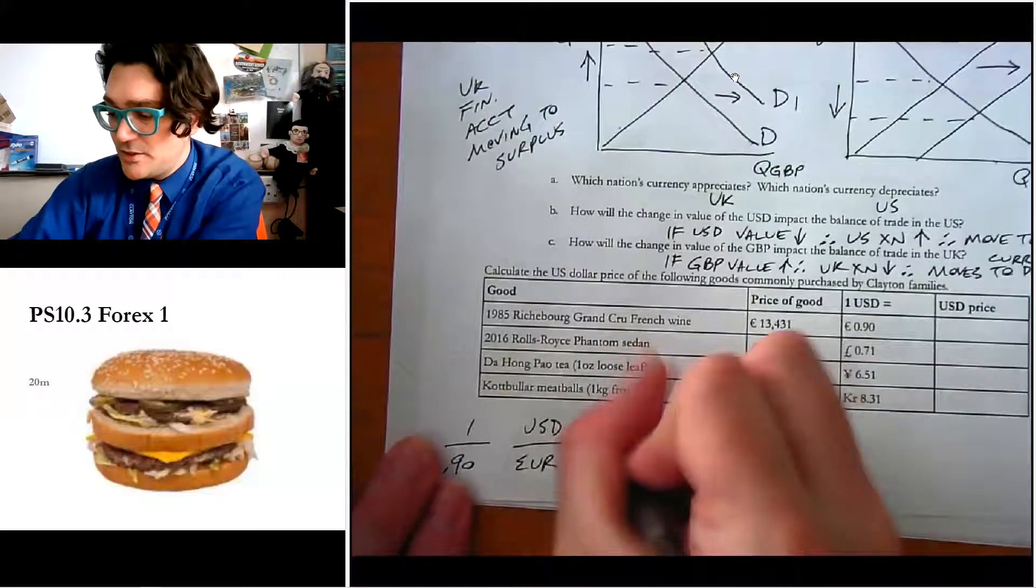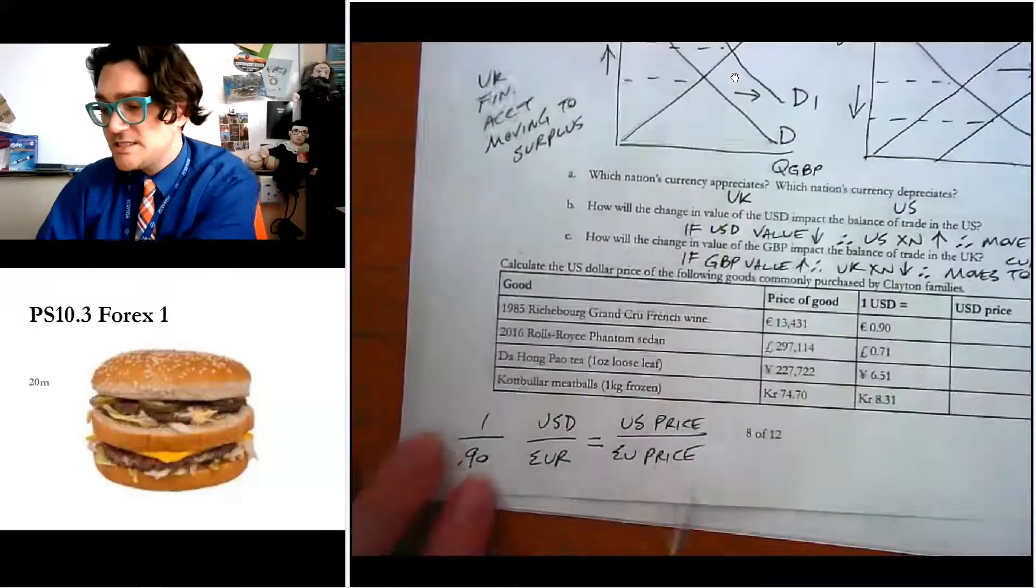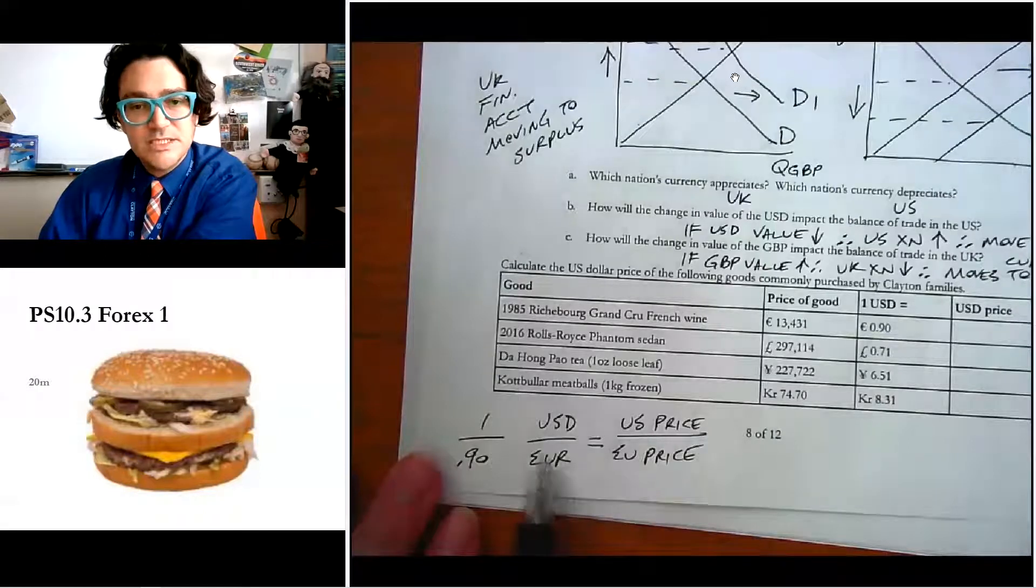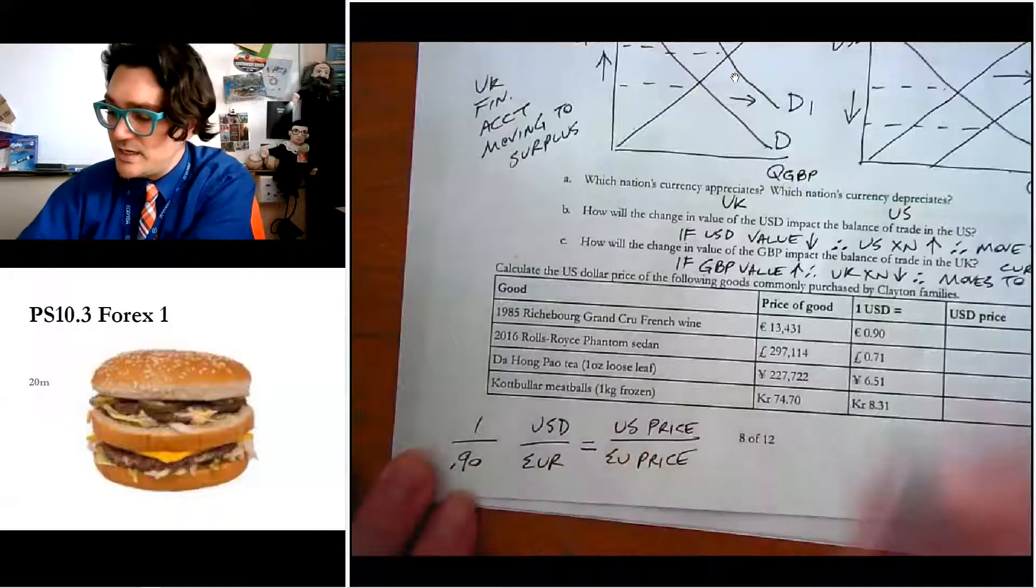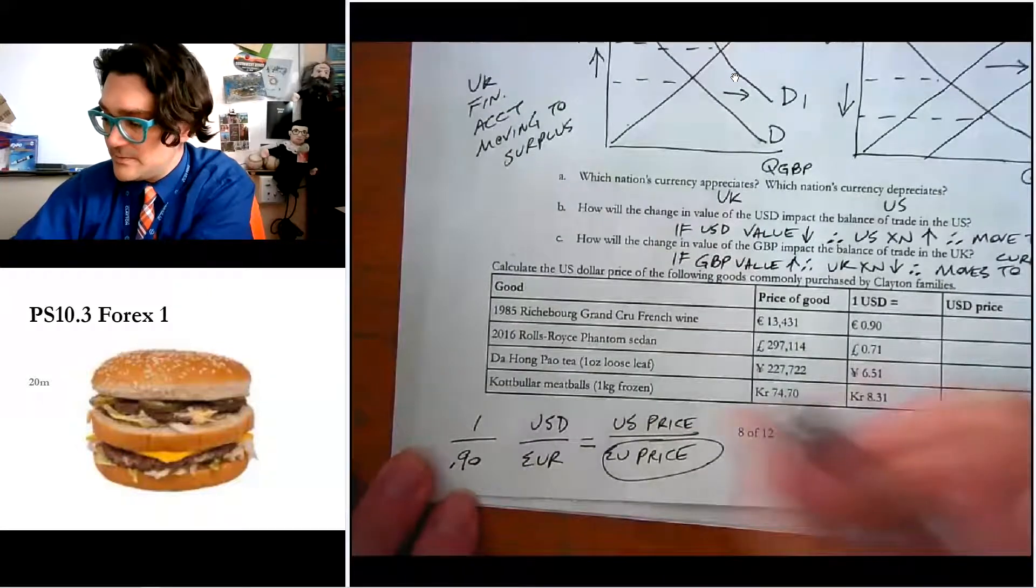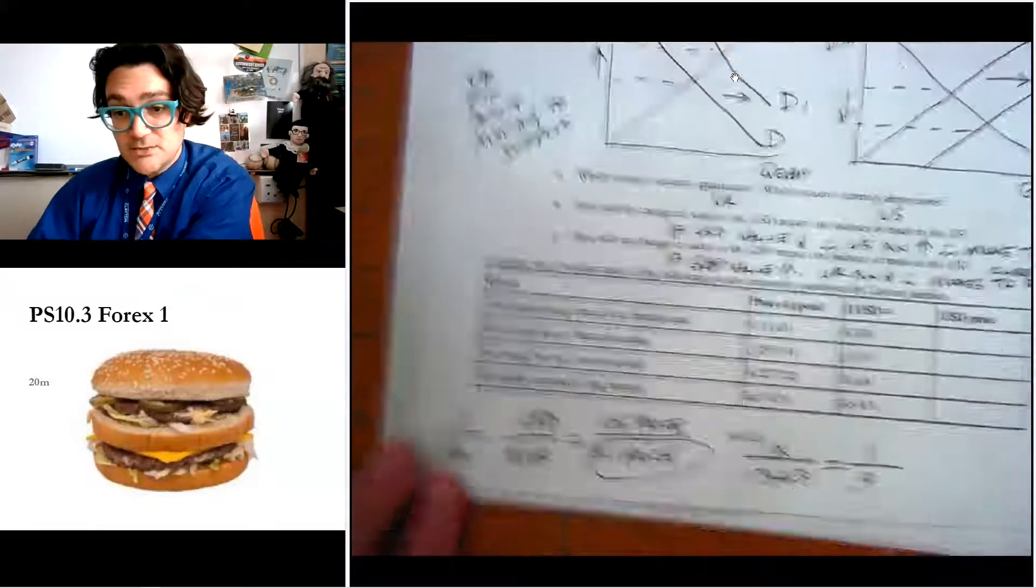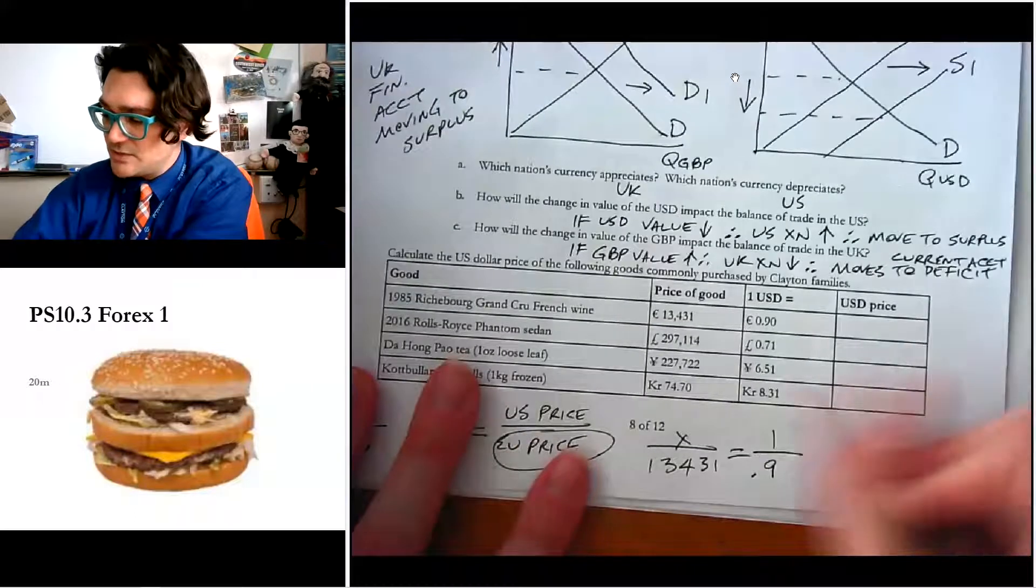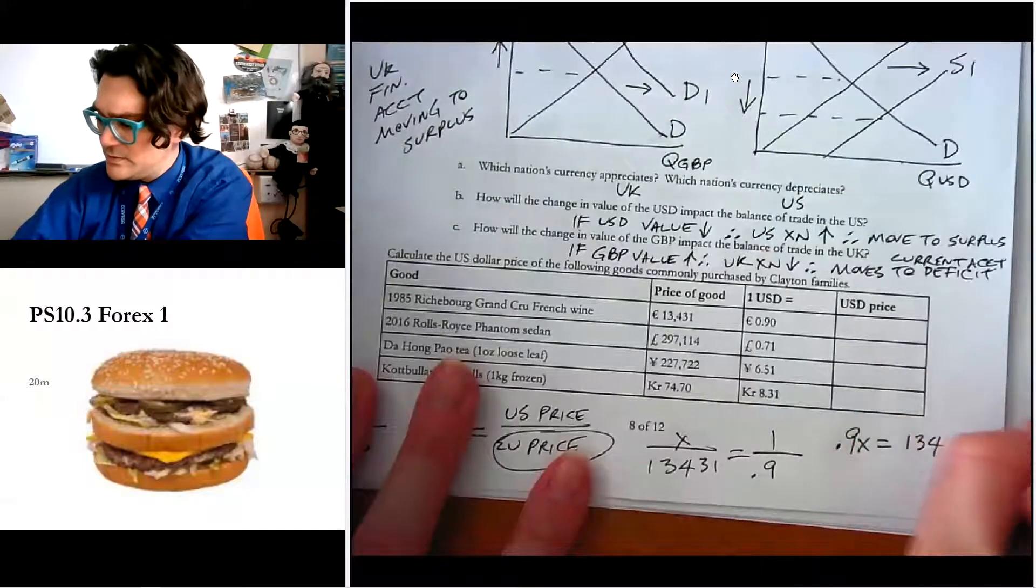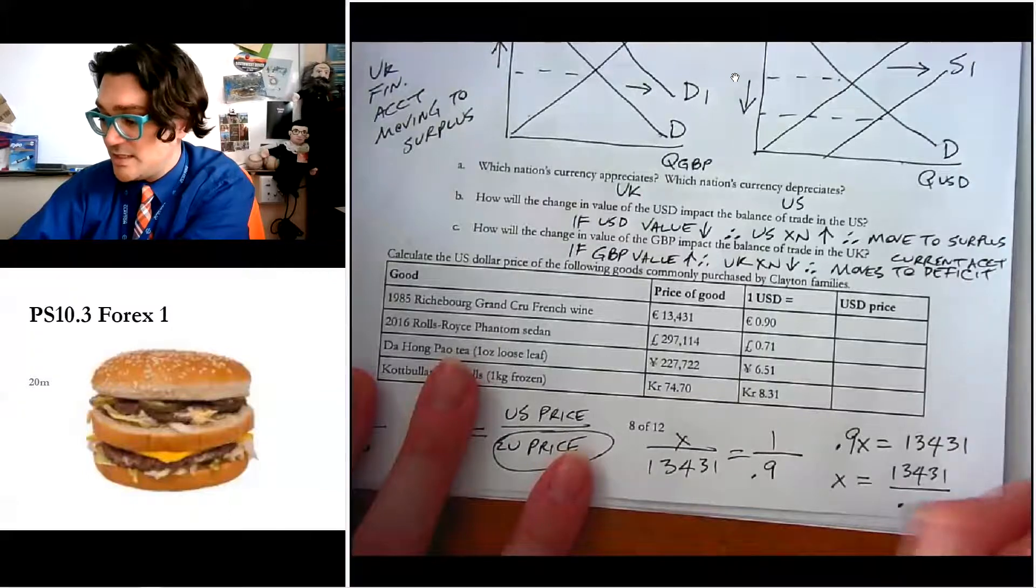And that has to equal the US price of the good divided by the EU price of the good. And that's because the ratio has to stay the same. The price in Europe versus the price of the US has to be the same as the ratio of these two numbers. And so if we have 1 over 0.9, and we're given the EU price, so we're given the EU price is 13.431. And we're just kind of solving here. So we can kind of reverse engineer this a little bit. And we go 0.9x is equal to 13.431. So x is equal to 13.431 divided by 0.9. So the kind of trick to this is if you're given the price in the other currency, and you have kind of the other currency's value to what your currency is, well, you could just divide it by whatever that price is.